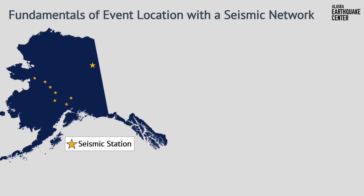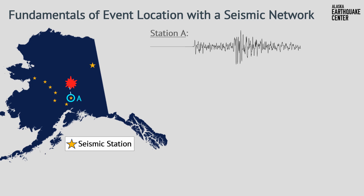Before we can start refining the automatic solutions, we need to understand the fundamentals of earthquake location with a seismic network. Let's take the state of Alaska and assume that the stars in the Big Dipper and the North Star are seismic stations. An earthquake happens in interior Alaska near Fairbanks. The first seismic station to record this earthquake will be the closest to its epicenter — we'll call it Station A — and the recorded waveforms might look something like this.